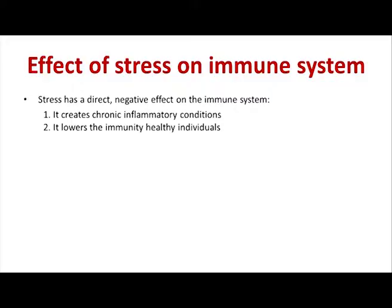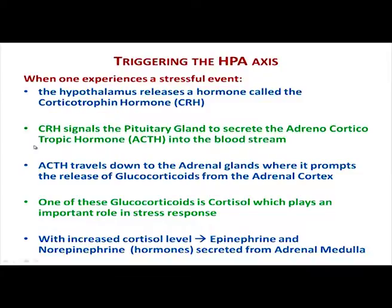There are two main ways that stress has a direct negative effect on the immune system: it creates chronic inflammatory conditions, and it lowers the immunity of those who otherwise might have a healthy immune system. Let's look at the HPA axis once more as a refresher — the hypothalamus releases corticotropin-releasing hormone, which helps release ACTH into the bloodstream. ACTH moves down to the adrenal glands and releases glucocorticoids, one of which is cortisol.